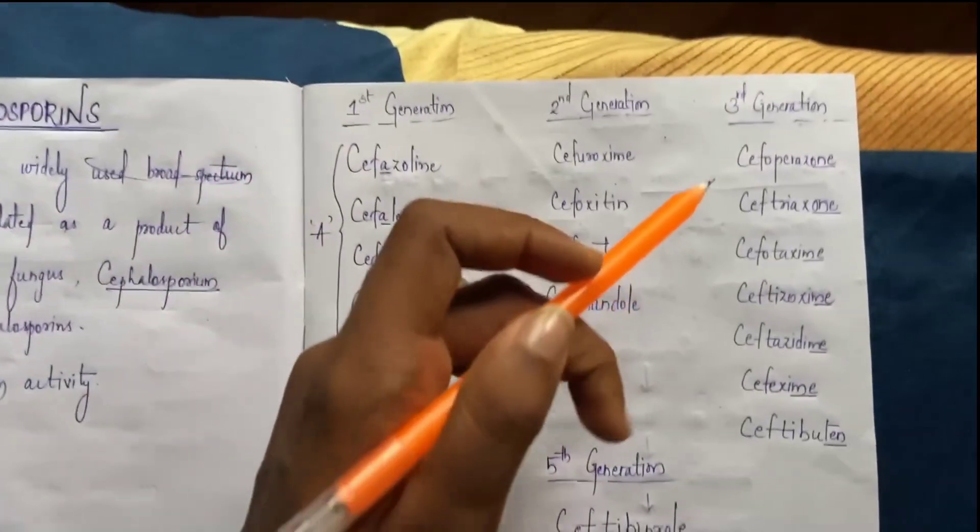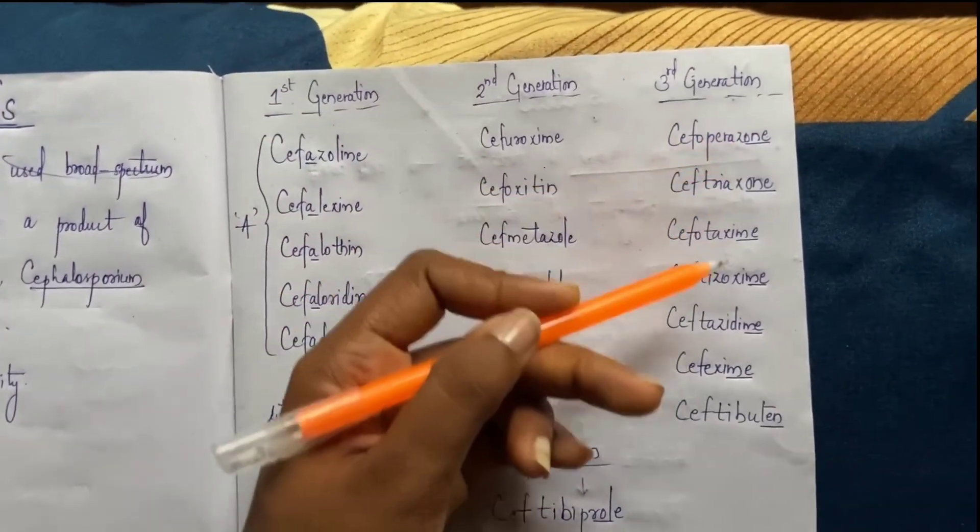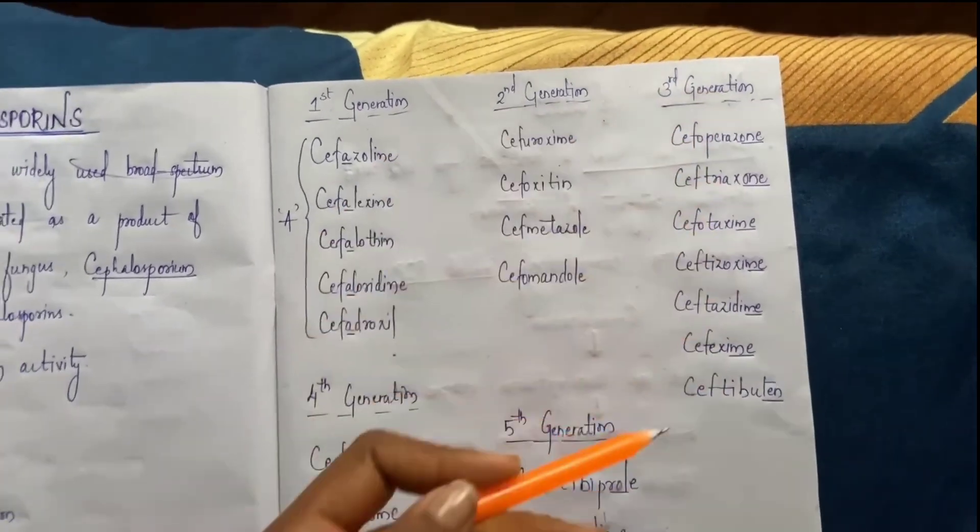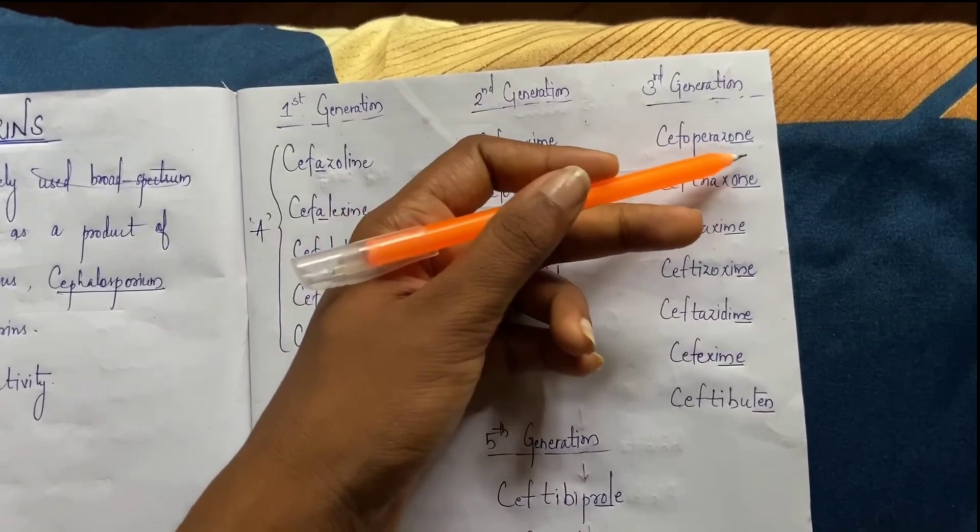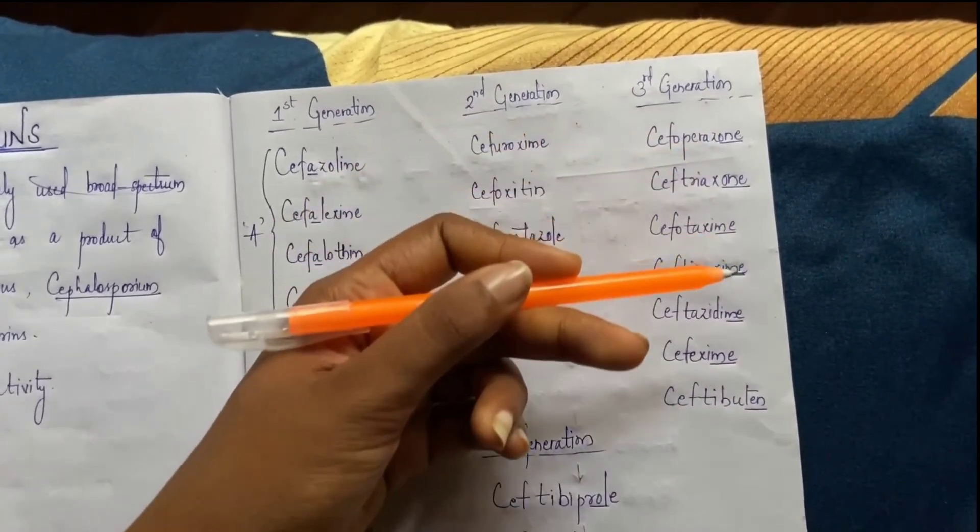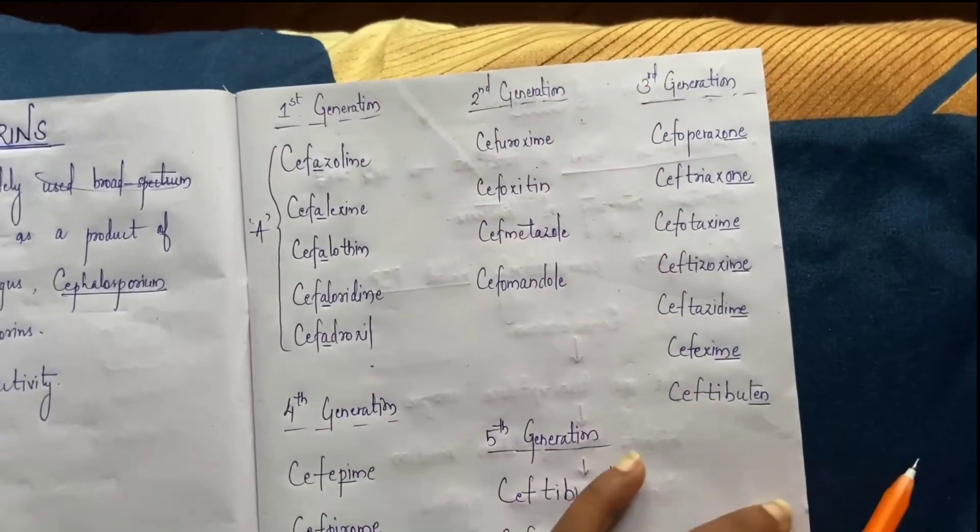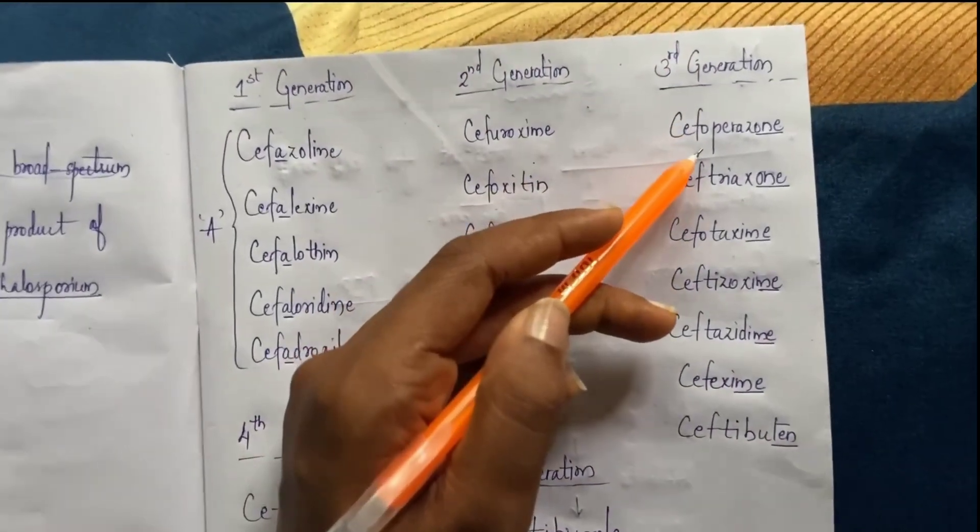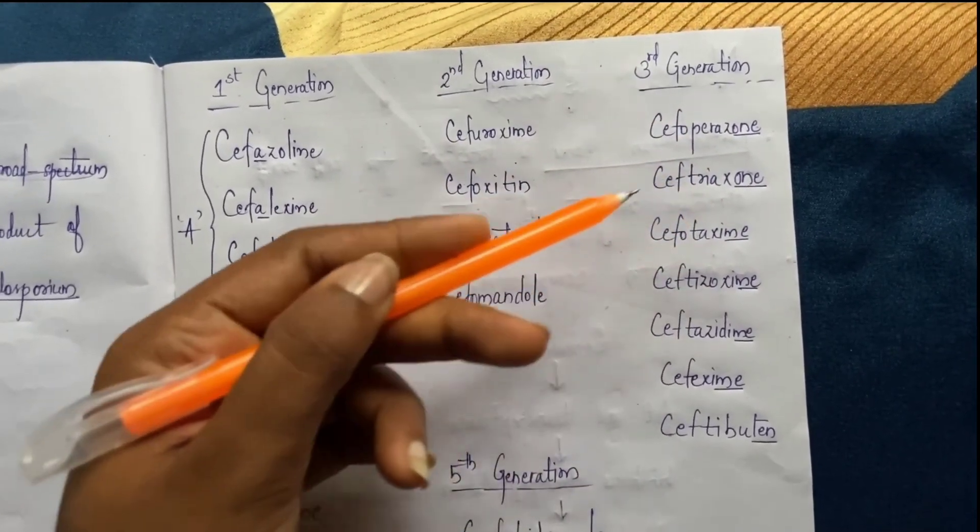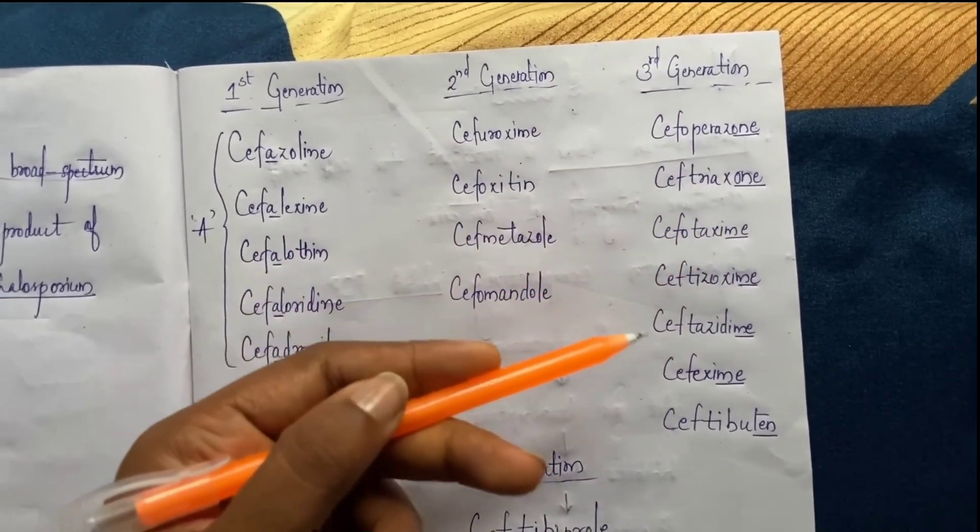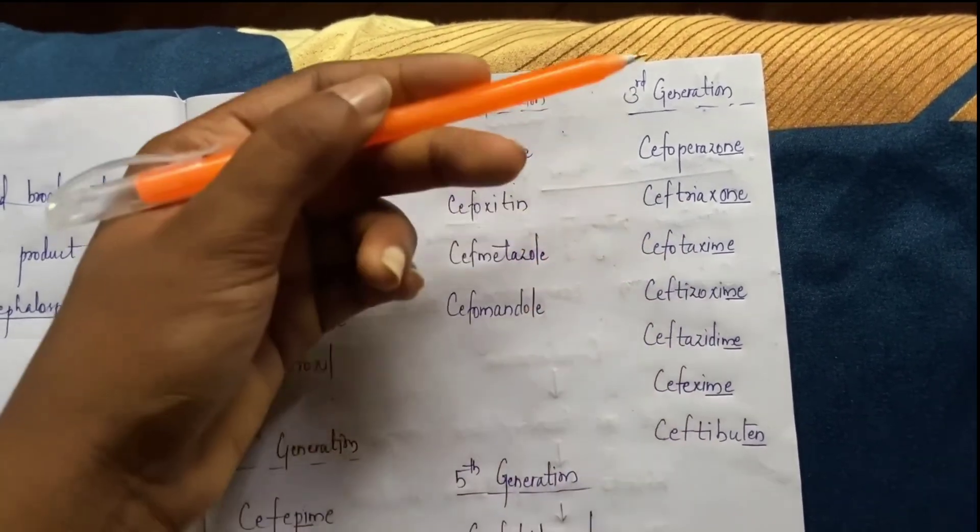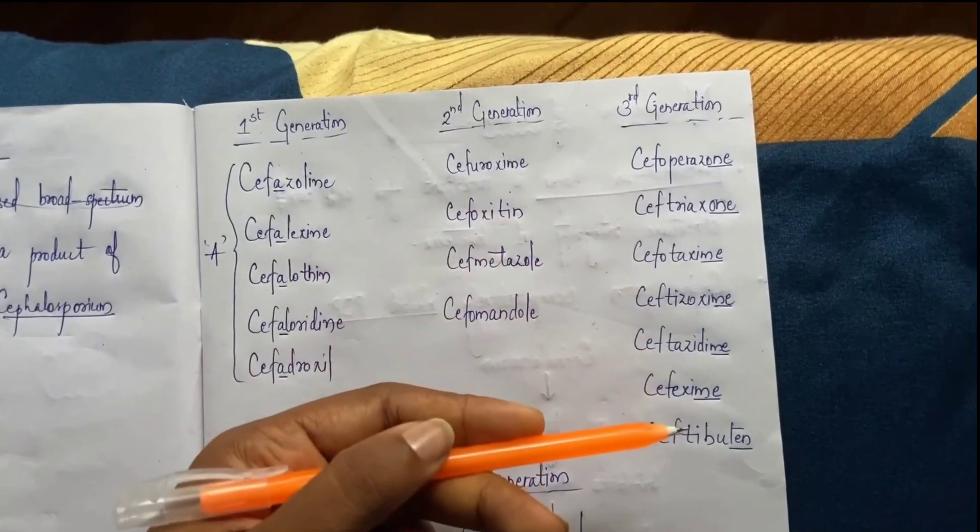Third generation has one, me, or ten at the end. If one, me, or ten comes at the end, that is third generation. Examples include Cefoperazone, Ceftriaxone, Ceftazidime, Cefixime, and Ceftibuten. So that is the clue for third generation. The remaining Ceph medicines are second generation.